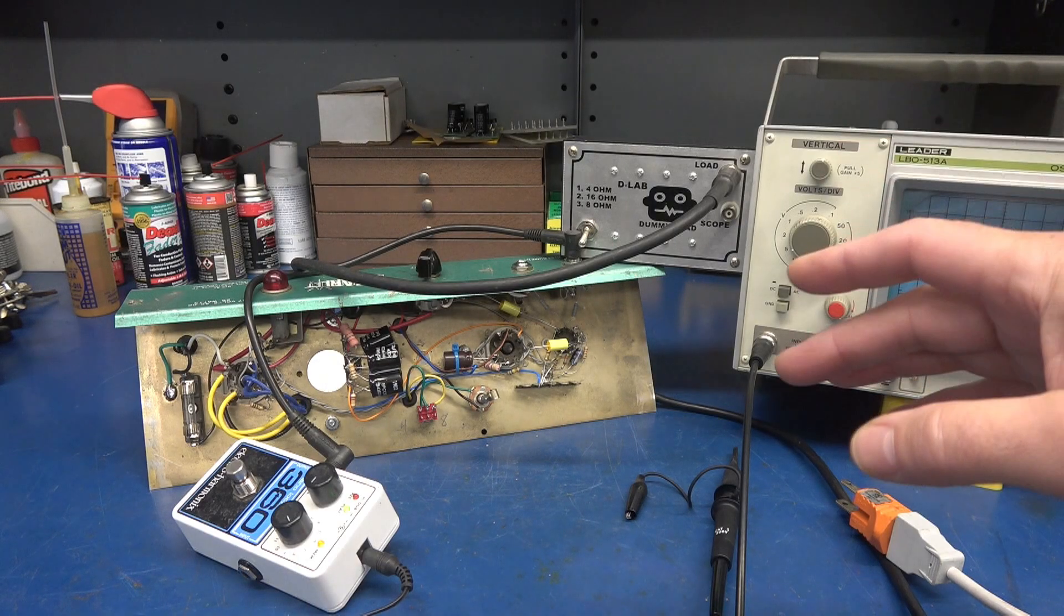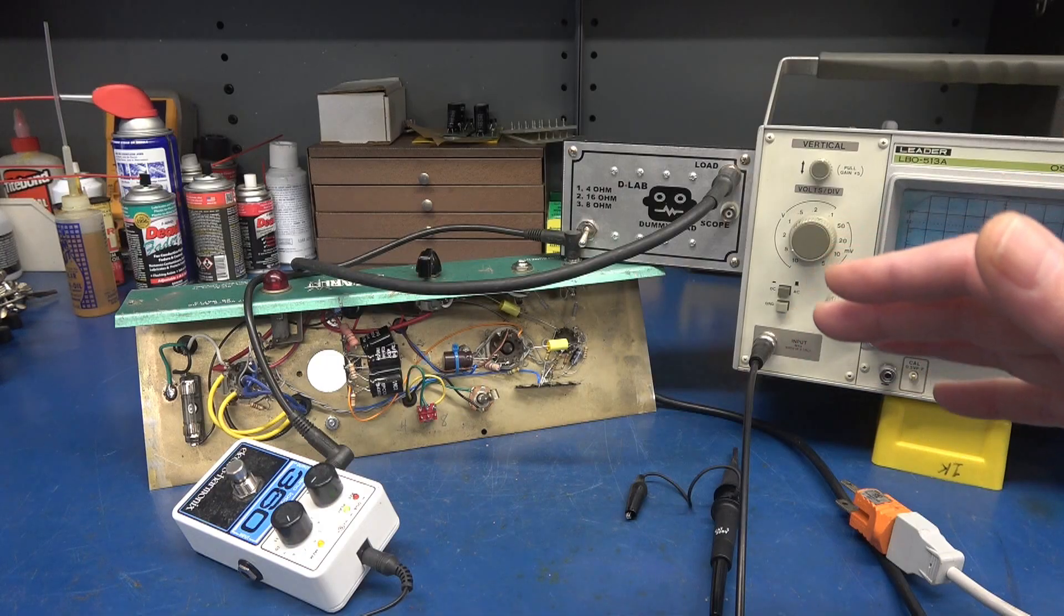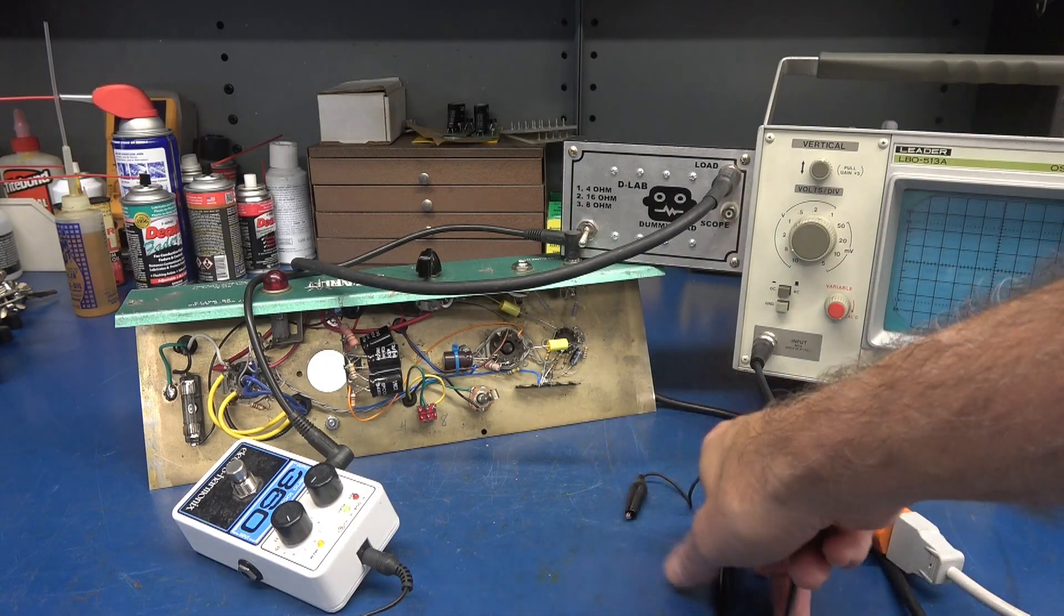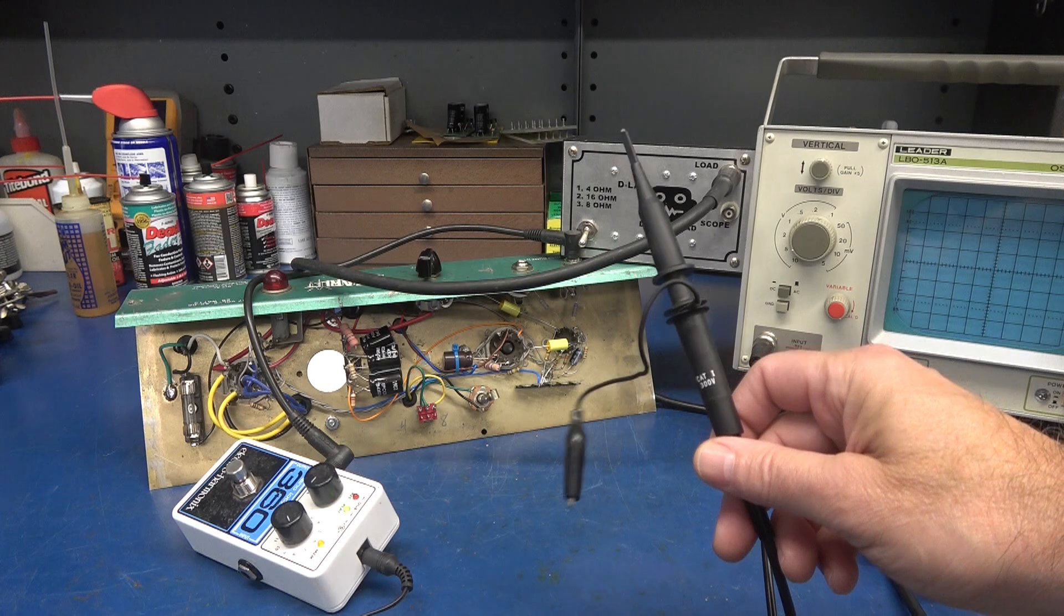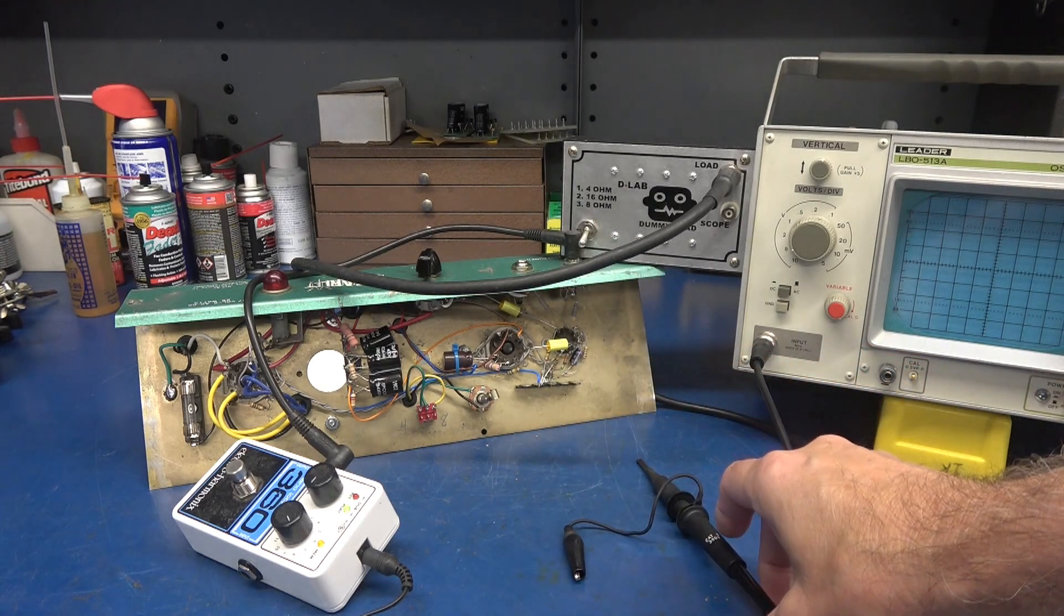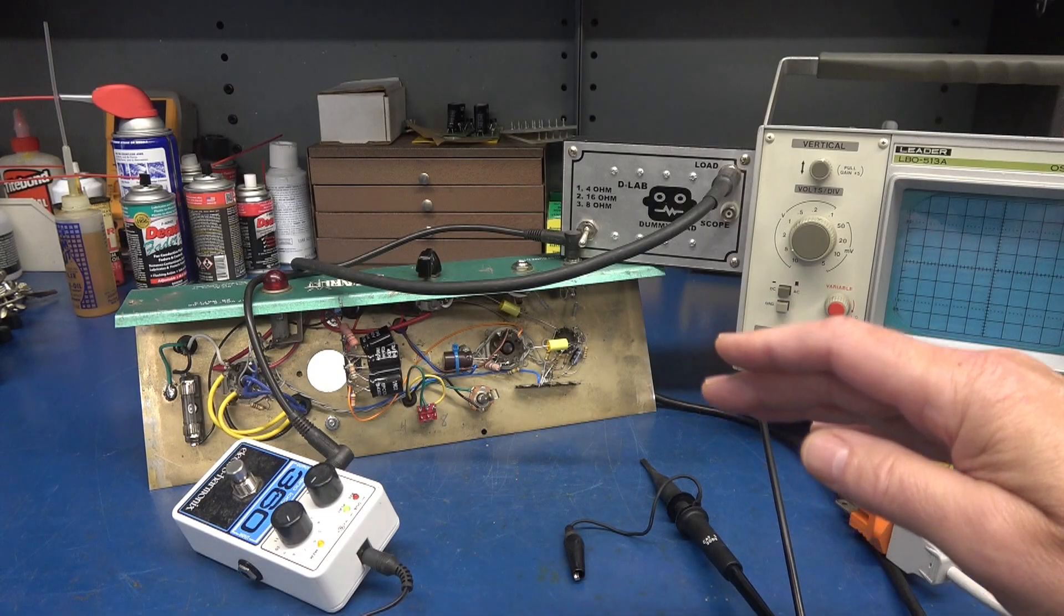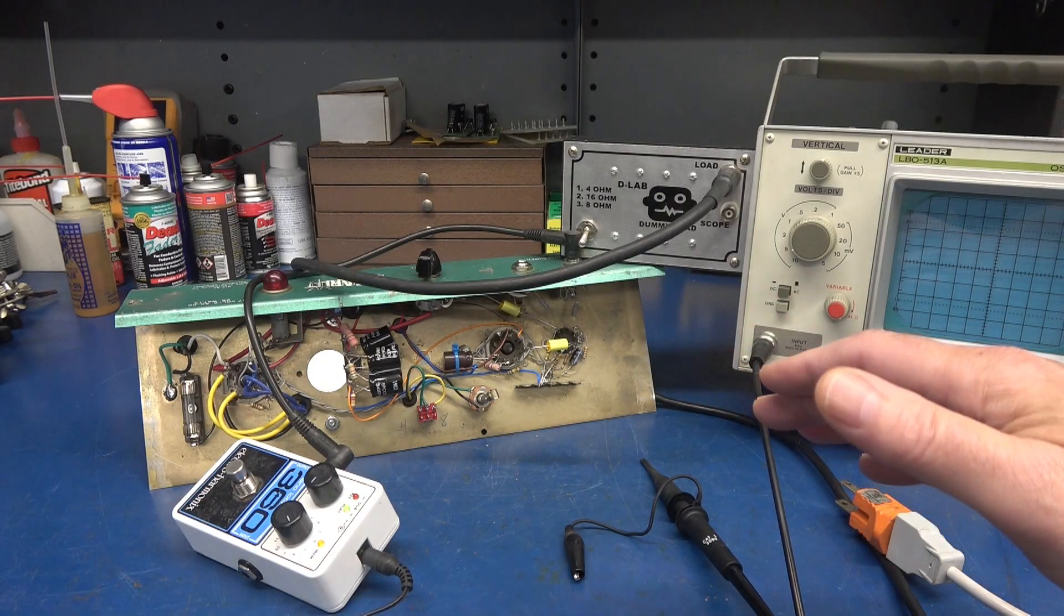Ensure that the amp is properly fused or use an external variac supply. Always use a quality probe when testing. Never use a bare wire or a clip lead because you can easily contact adjacent wires, damaging the amp, scope, or maybe even you.